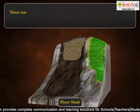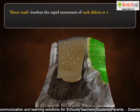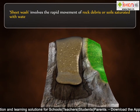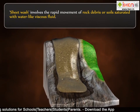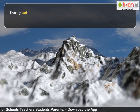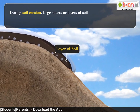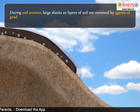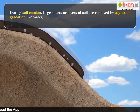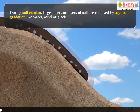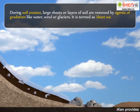Sheet wash involves the rapid movement of rock debris or soil saturated with water, like a viscous fluid. During soil erosion, large sheets or layers of soil are removed by agents of gradation like water, wind, or glaciers. This is termed sheet wash.